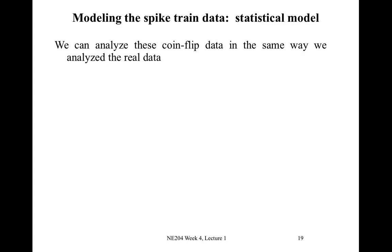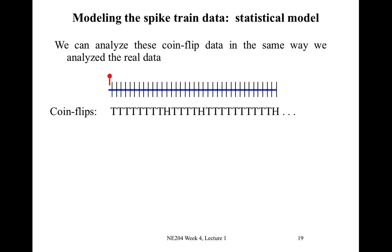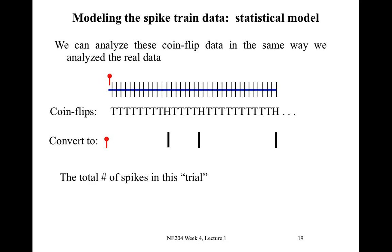We've generated artificial spike train data through this coin-flipping model, and we can analyze these coin flip data in the same way we've analyzed real spike train data. We have a statistical model where we flip a coin in each sub-interval. Every once in a while we observe an H with this biased coin, and we can convert this into a spike train representation, where every time we observe an H, we indicate that sub-interval with a tick mark. We can perform an analysis on this spike train data and count up the number of spikes in the trial — in this case, we observe three spikes. So we can analyze the spike train data in the exact same way we've analyzed real data generated by a neuron.